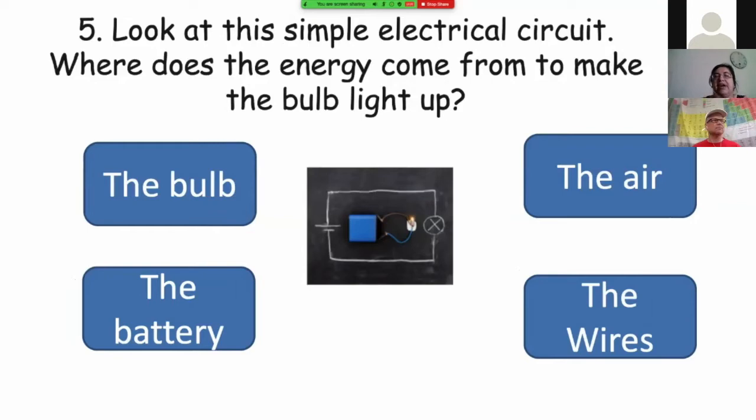Here we have an electrical circuit. It's very simple. It just consists of one battery, one small bulb. And where is the battery? Where is the energy? Where does the energy come from? How does the bulb light up? Is it because there is something in the bulb? There is something in the air. Because of the battery? Or just because of the wires? Why does the bulb light up?